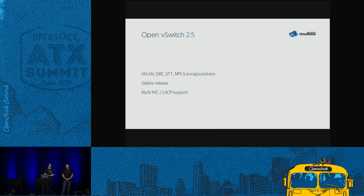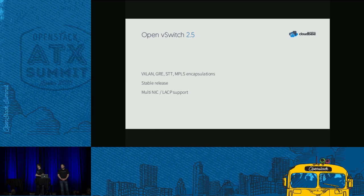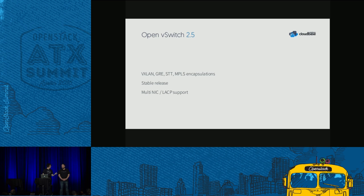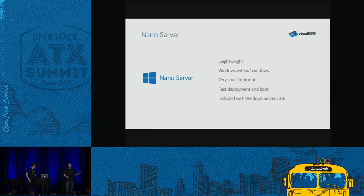The new Open vSwitch 2.5 release introduces a ton of new features — all types of encapsulation you'd expect: VXLAN, STT, MPLS and so on. This is a stable release. The previous 2.4 was marked as beta and experimental. Now 2.5 is stable, meaning we encourage you to use it in production. We consider it as stable as our existing networking Hyper-V agent which is based on the native Microsoft networking stack. Among many features, we also have LACP support, which was not available in the previous release.